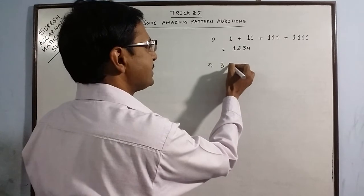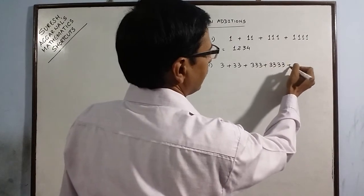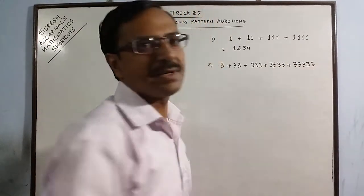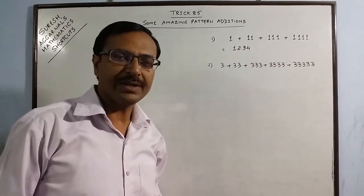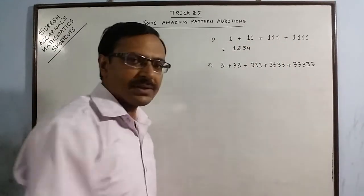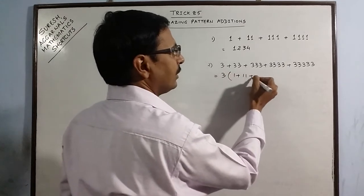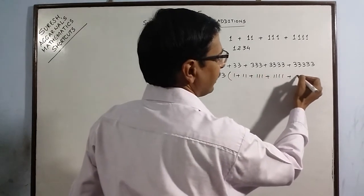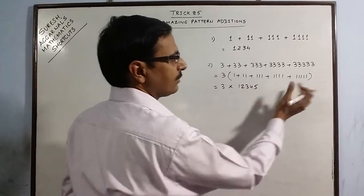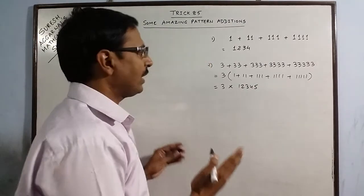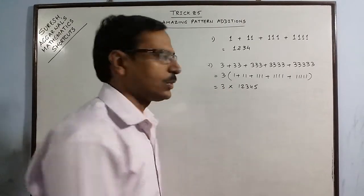Now consider the threes. Suppose you have five threes maximum: 3 + 33 + 333 + 3333 + 33333. Once you know the pattern of ones, you can easily find this sum, because this is actually three times the first example. Since one is repeated five times maximum, you get the sequence 12345, and you just find the product of 12345 with 3.